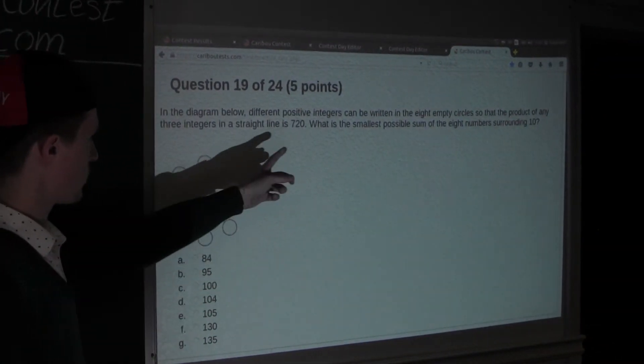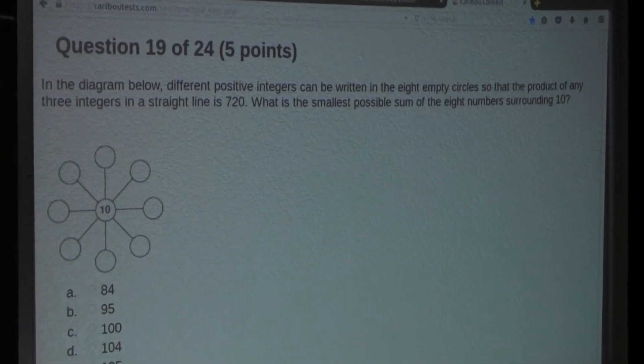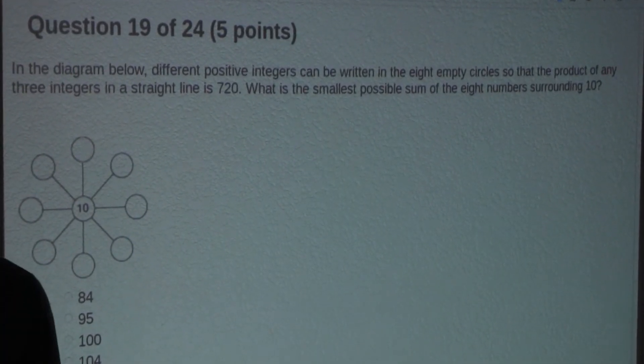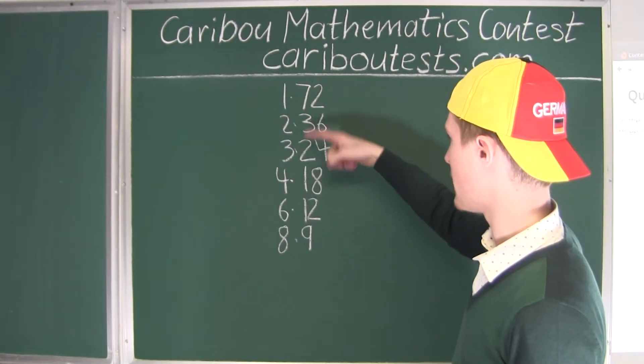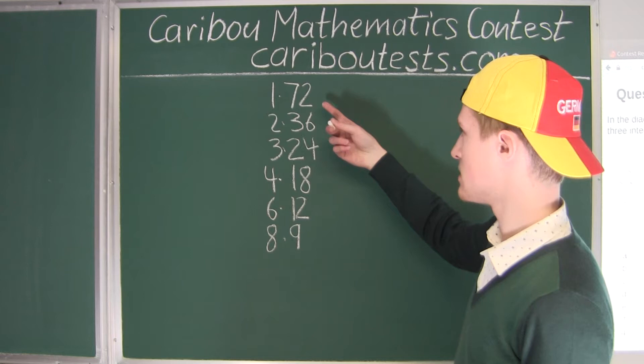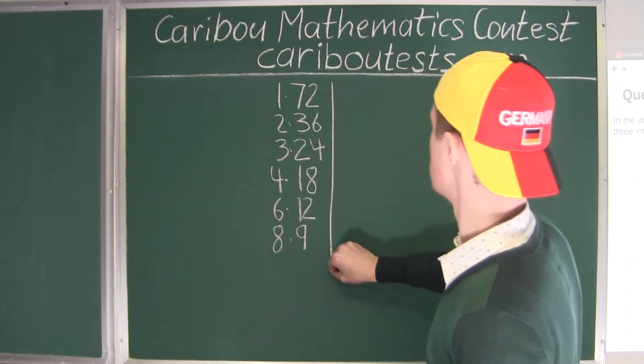Now from the question it asks, what is the smallest possible sum of the 8 numbers surrounding 10? That means we have to find the sum of all the pairs of these positive integers that multiply out to 72. So let's do this.